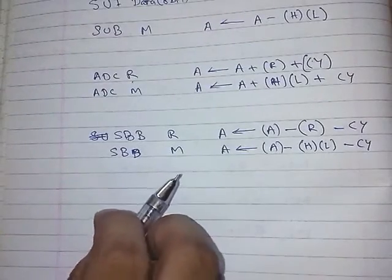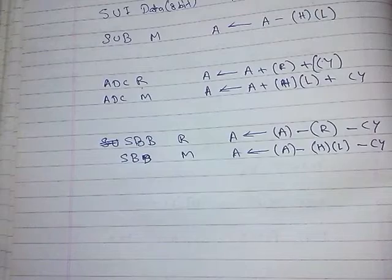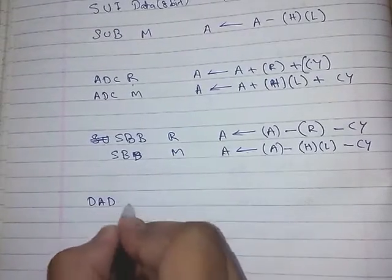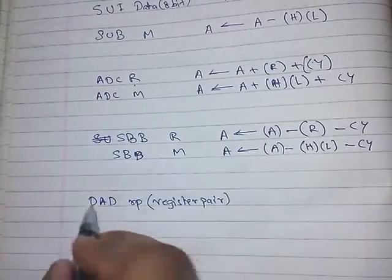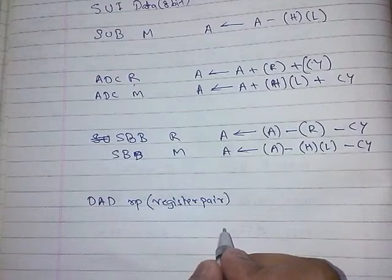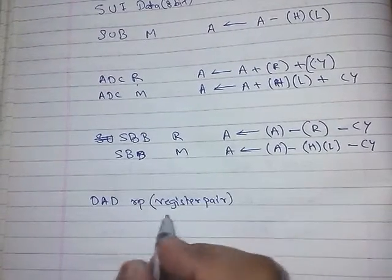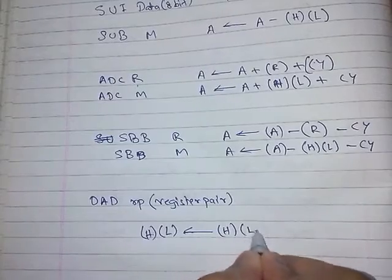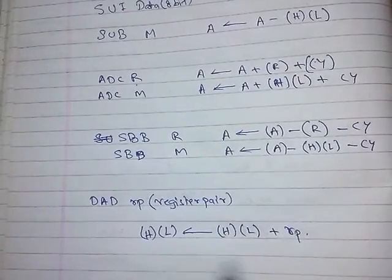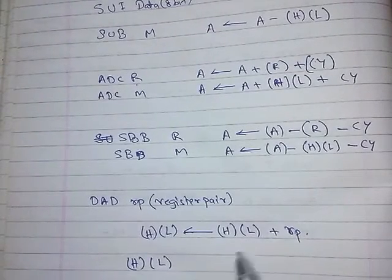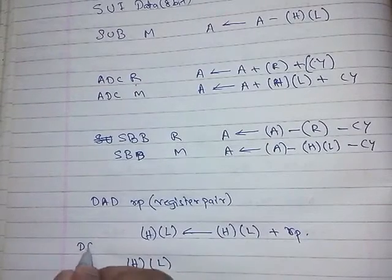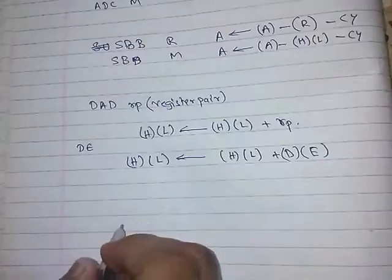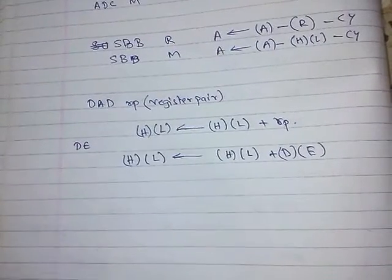This was for 8-bit addition and subtraction. But if we have to add 16-bit data, there is a special instruction: DAD RP, where RP means register pair. DAD will add the H-L pair with any register pair. For example, if we take register pair DE, then H-L = H-L + DE. There is no such instruction for subtracting 16-bit data.